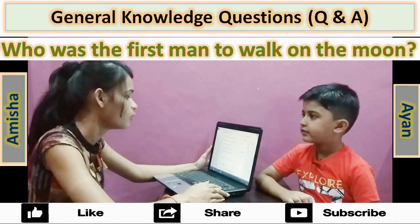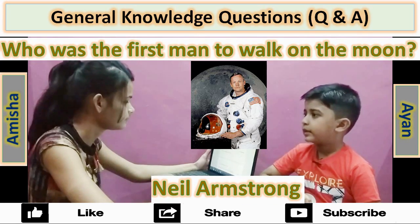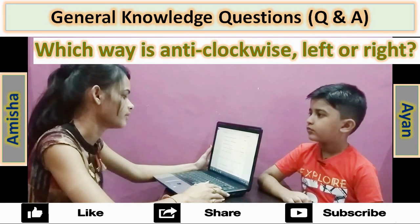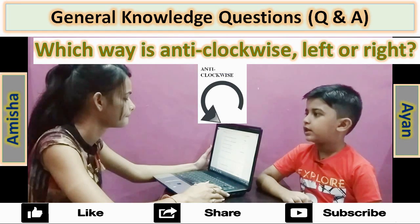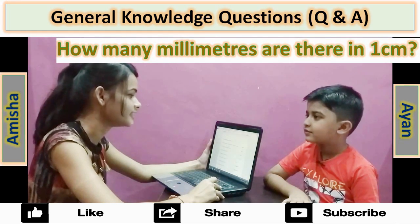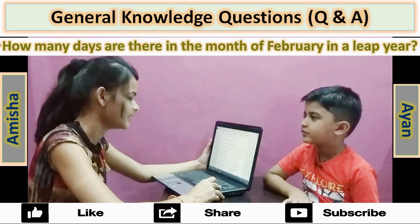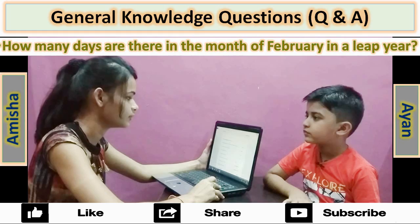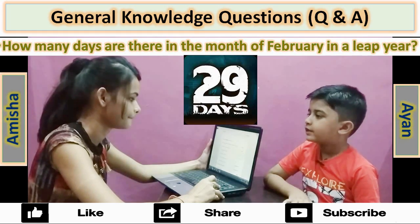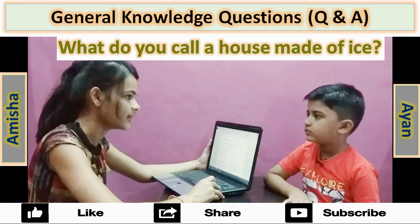Which animal is called the king of the jungle? Lion. Who was the first man to walk on the moon? Neil Armstrong. Which way is anticlockwise, left or right? Left. How many millimeters are there in one centimeter? 10 millimeters. How many days are there in the month of February in a mid-year? 29 days.